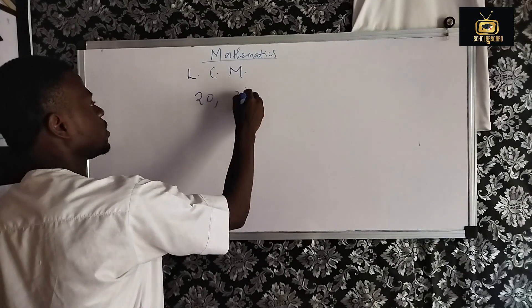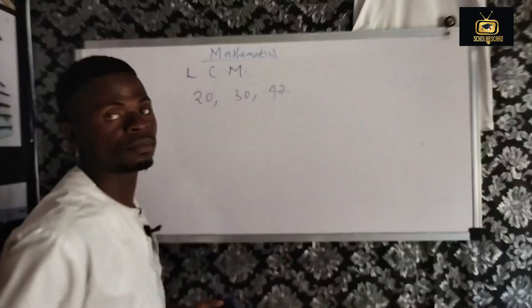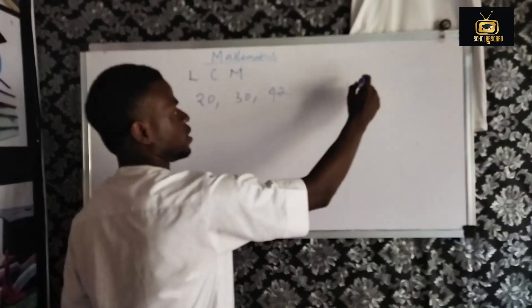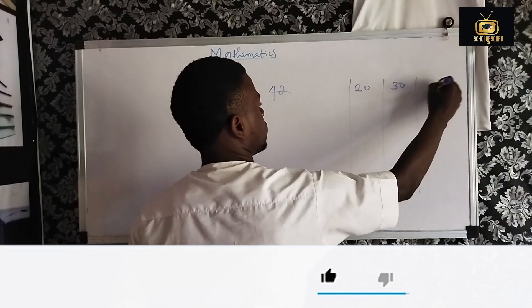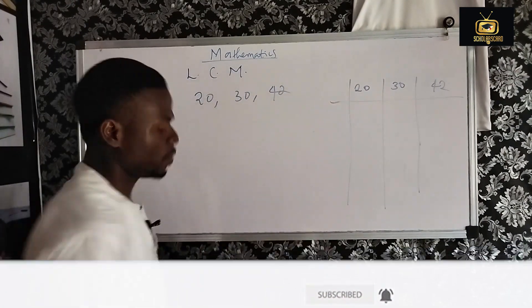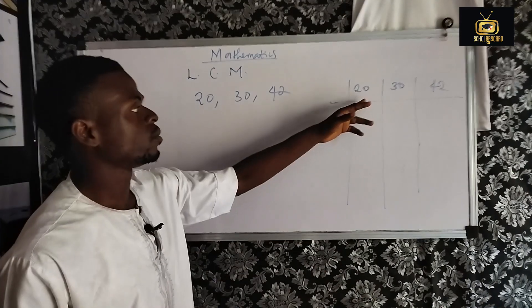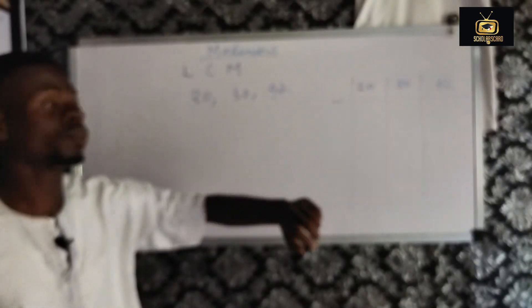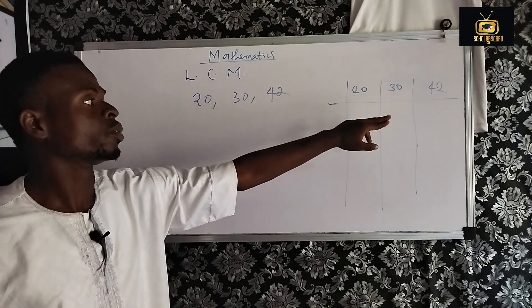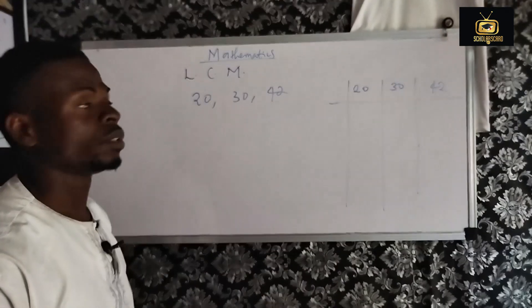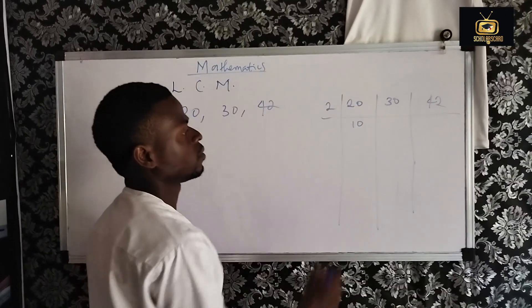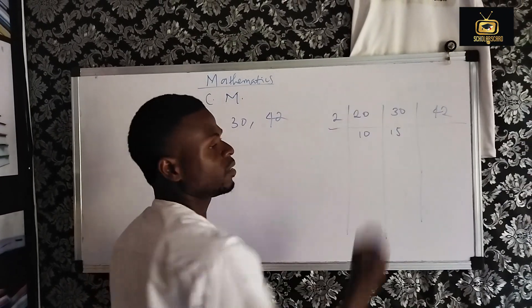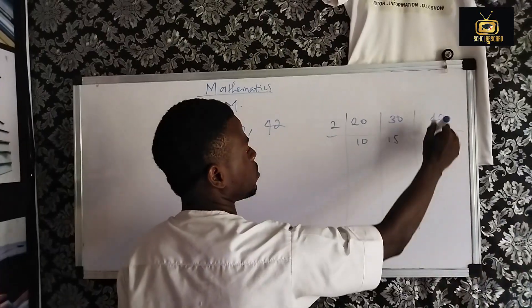Now let's take a look at another example. We have 20, 30, and 42 — this is the LCM of three numbers. Write 20, 30, and 42 and draw your line. The first prime number 2: 2 into 20 gives 10, 2 into 30 gives 15, 2 into 42 gives 21.